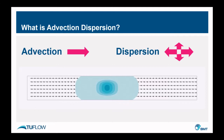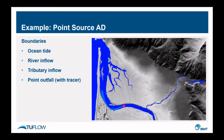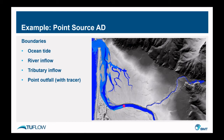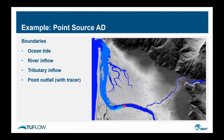Having described what advection dispersion is, I'll now take you through three example applications. This first example is quite possibly the most obvious use of AD, where we've upgraded an existing flow model by applying an outfall to the river. We specified the location, assigned a volume outflow, and then also a tracer concentration at that location. By running the model we can then see how that pollutant affects and disperses throughout the system.